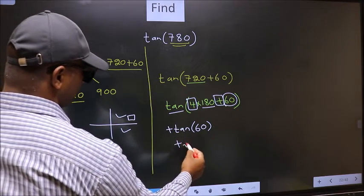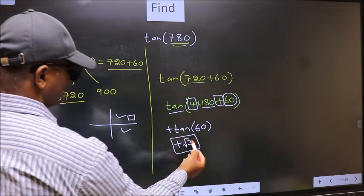So plus tan 60 is root 3. This is our answer.